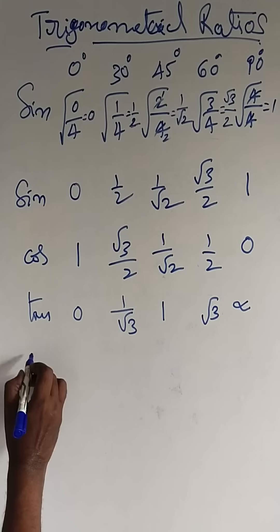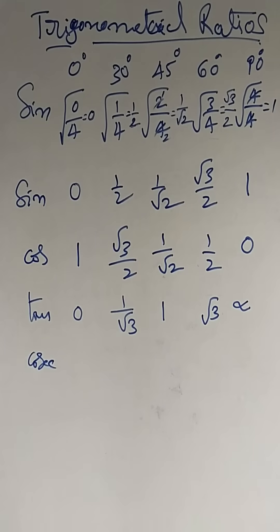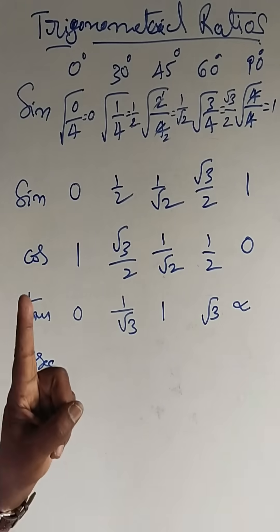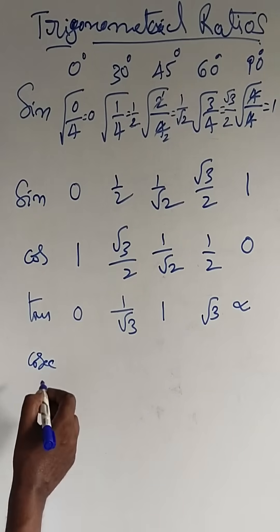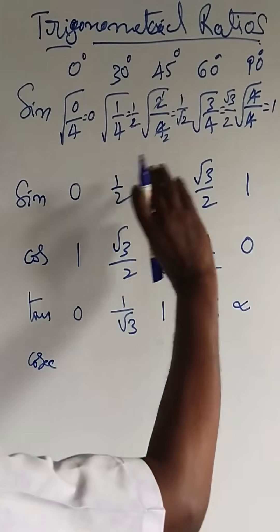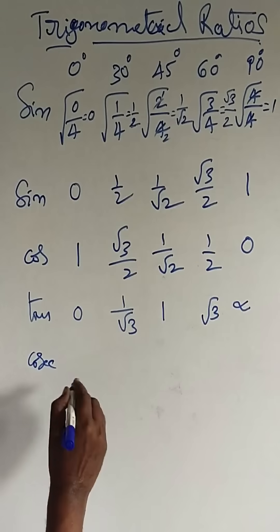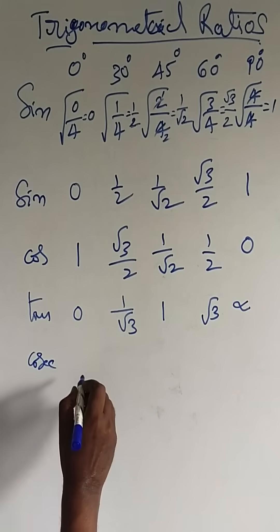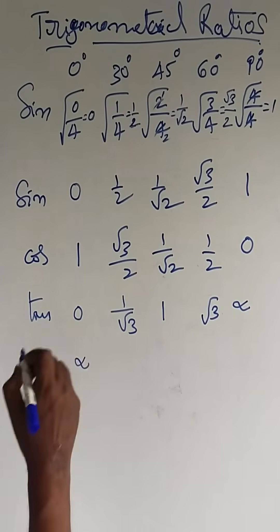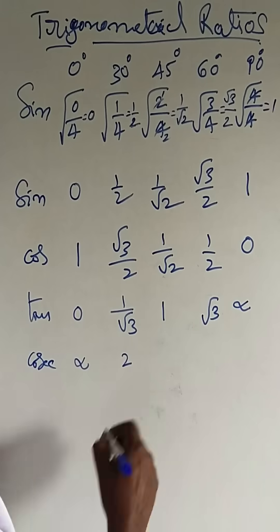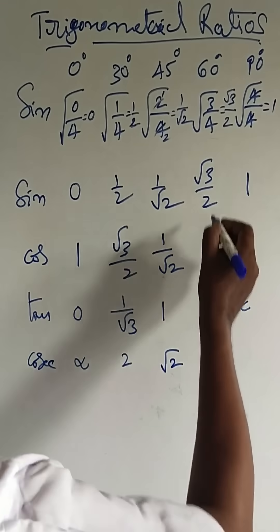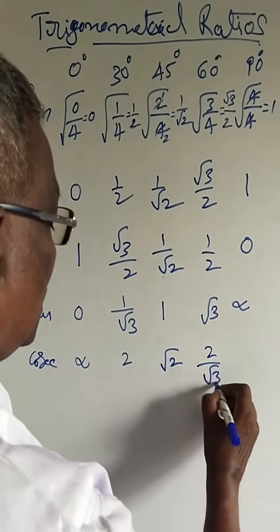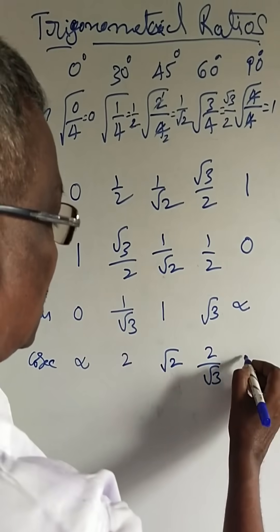Next, what about cosecant? We have the formula: sin theta into cosecant theta is equal to 1, so cosecant theta is equal to 1 by sin theta. Whatever the sin values are, simply reverse them. 1 by 0 means infinity; reverse of 1 by 2 is 2; reverse of 1 by root 2 is root 2; reverse of root 3 by 2 is 2 by root 3; reverse of 1 is 1.